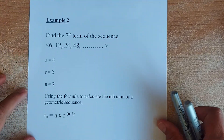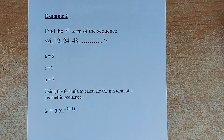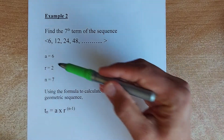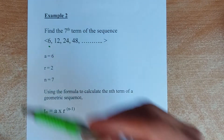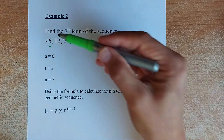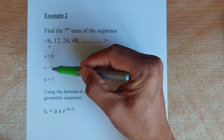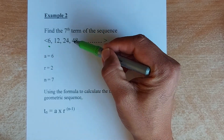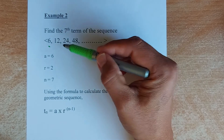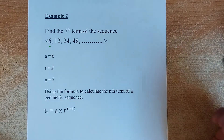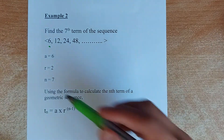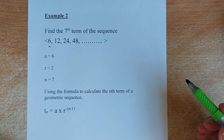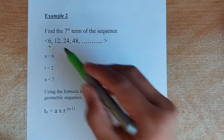Example 2 is a similar question with different numbers. Find the seventh term of the sequence 6, 12, 24, 48. You find the first term — the first term is 6, so A is 6. The ratio: take the second term divided by the first term, 12 divided by 6 is 2. 24 divided by 12 is also 2. 48 divided by 24 is also 2. So the ratio is 2. Since they asked for the seventh term, N equals 7.